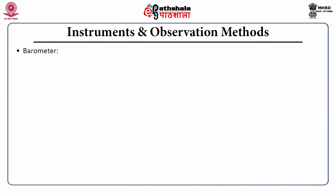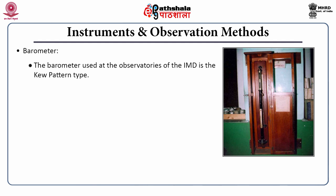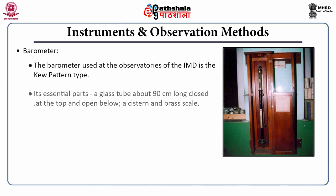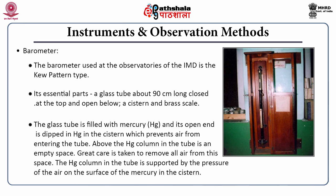The next equipment is the barometer, used to measure air pressure. In most IMD observatories, the Kew-pattern type barometer is used. Its essential part is a glass tube about 90 centimeters long, closed at the top end and open at the bottom. There is a cistern and a brass scale. The glass tube is filled with mercury and its open end is dipped in mercury in the cistern, which prevents air from entering the tube. Above the mercury column in the tube is an empty space, and care should be taken to remove all air from this space. The mercury column in the tube is supported by the pressure of the air on the surface of the mercury in the cistern.